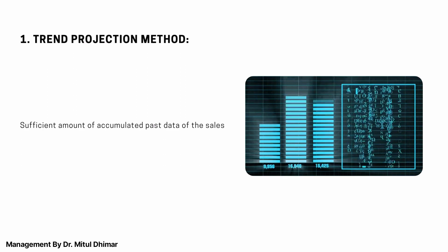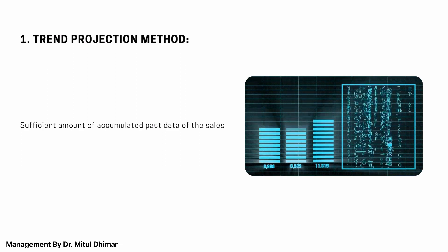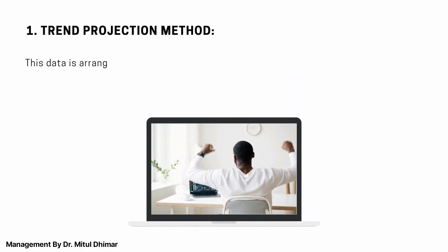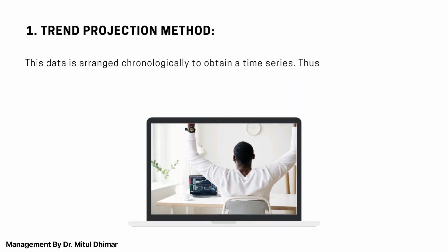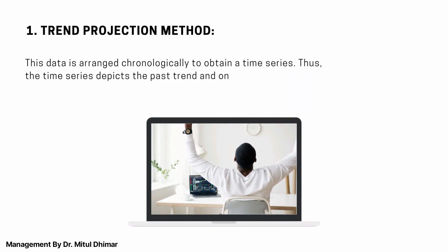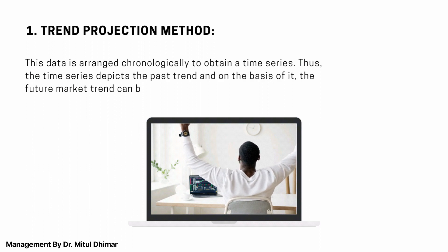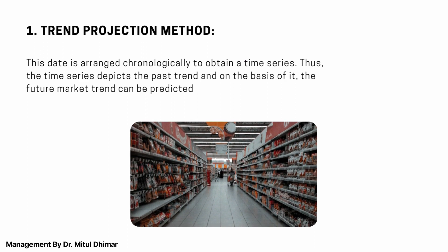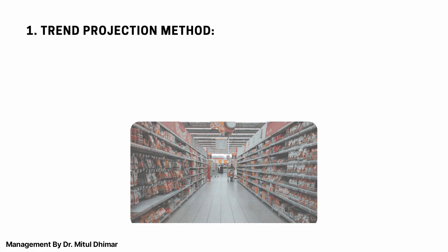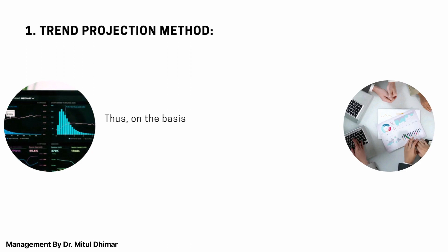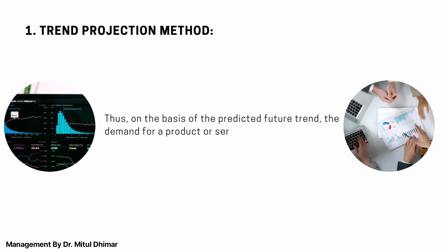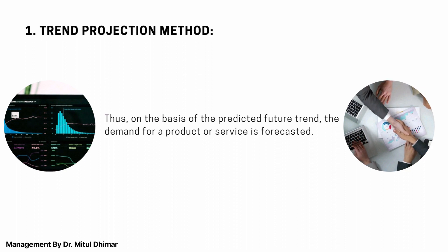Trend projection method. This method is useful where the organization has an amount of accumulated past data of the sales. This data is arranged chronologically to obtain a time series. Thus, the time series depicts the past trend and on the basis of it, the future market trend can be predicted. It is assumed that the past trend will continue in the future. Thus, on the basis of the predicted future trend, the demand for a product or service is forecasted.